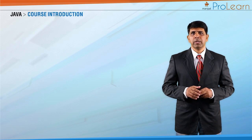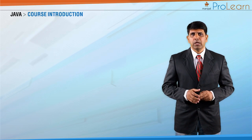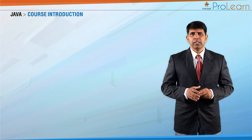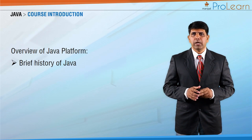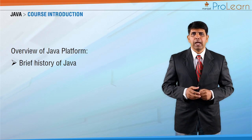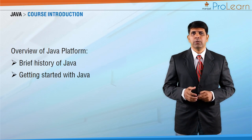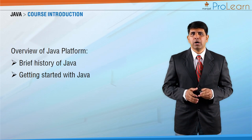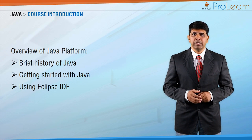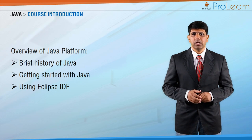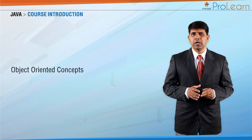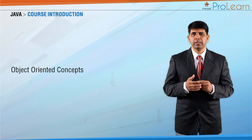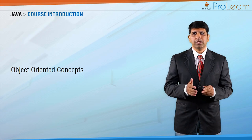Let's have a look at the modules of this course. There are overall 14 modules. In the first module, we will learn about a brief history of Java and get an overview of how a Java program is written, compiled, and executed. You will also get to know how to use the most popular IDE called Eclipse. In the second module, you will be introduced to the concepts around object-oriented programming, which is very important to understand so that you can apply it in Java.